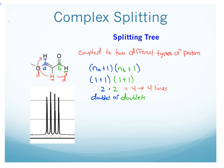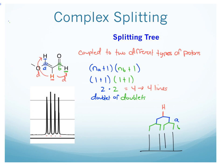We can use a splitting tree to think about the splitting that occurs here. Here's our proton, giving rise to a signal. That initial signal gets split by proton A into a doublet — so we split that initial signal into 2. Then that signal gets further split into another doublet thanks to B. So each of those gets split into signals because of B. And what we end up with are 4 lines in the spectrum, which is what we see.